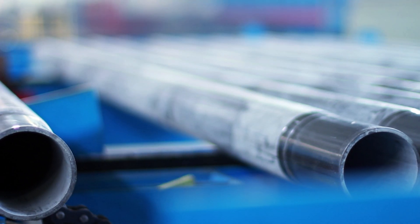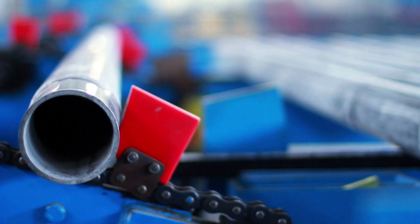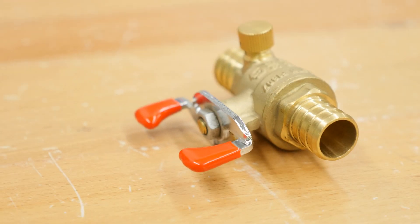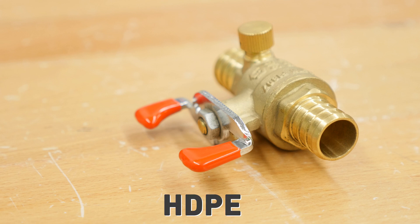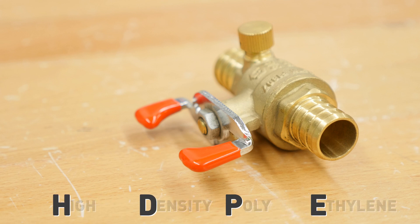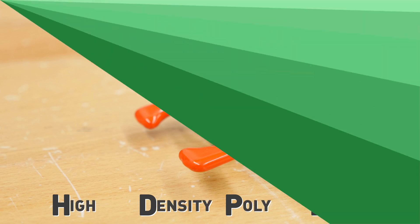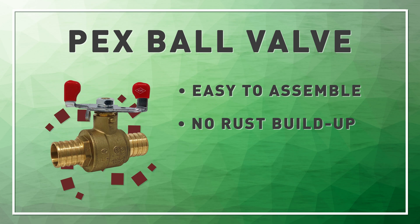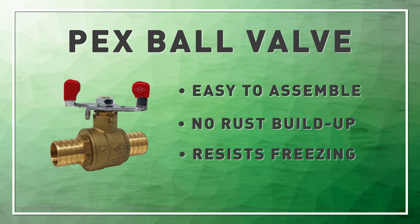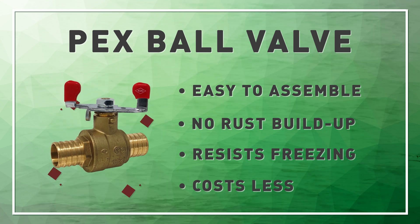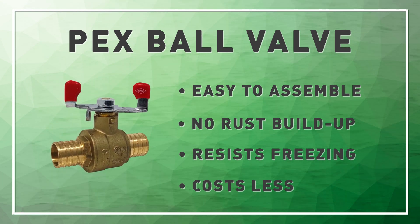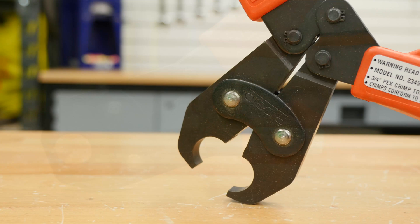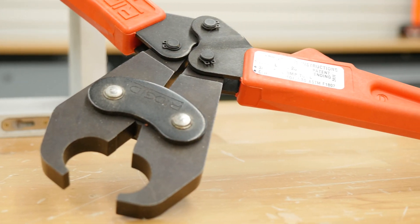Now, if you want an alternative to metal pipe systems, there's the option of PEX ball valves. They function just like a regular ball valve, but are designed to connect with PEX tubing made from HDPE, or High Density Polyethylene Polymer. Some of the reasons you may want a PEX system are: they are easier and safer to assemble, rust won't build up in the PEX tubing, PEX is much more resistant to freezing temperatures, and PEX systems cost less than traditional pipelines. To install, all you need is a PEX crimp tool in order to tighten the seal between the valve and the tube.